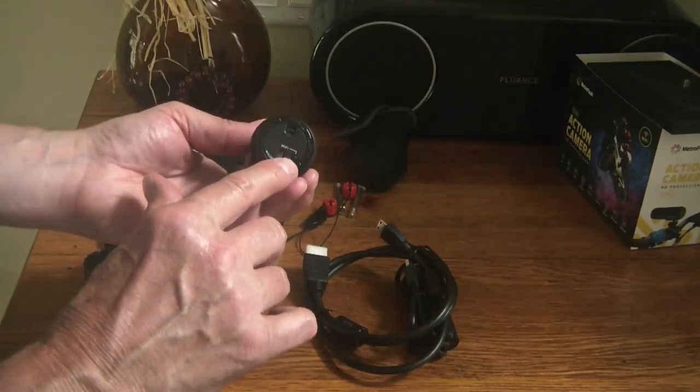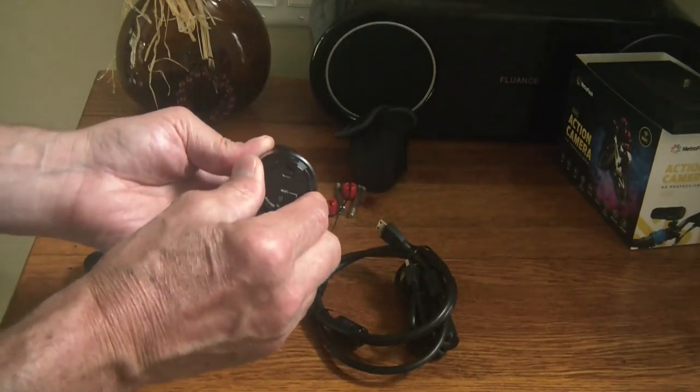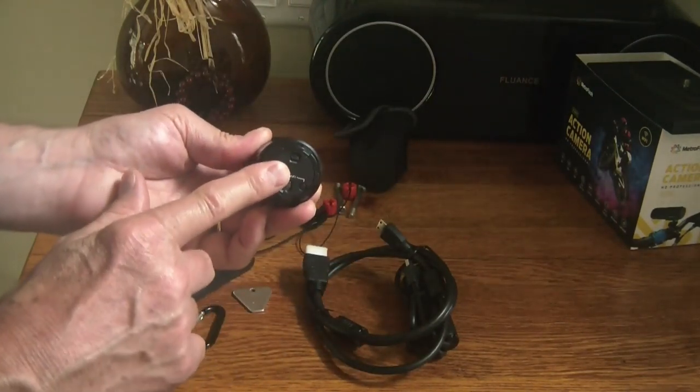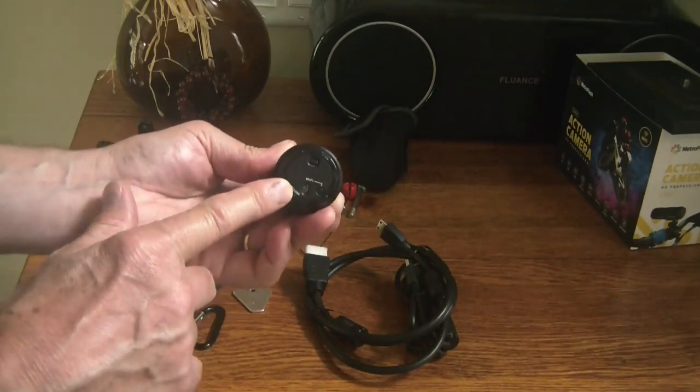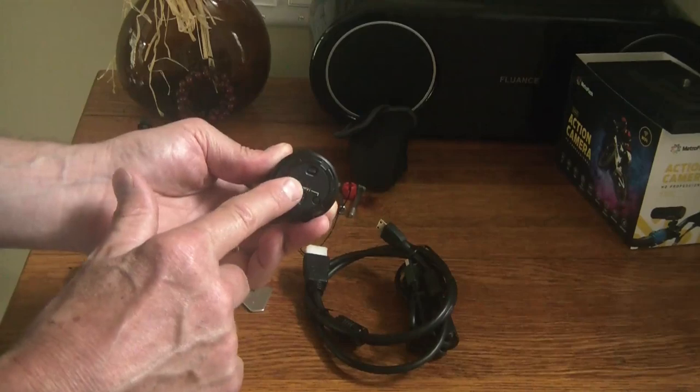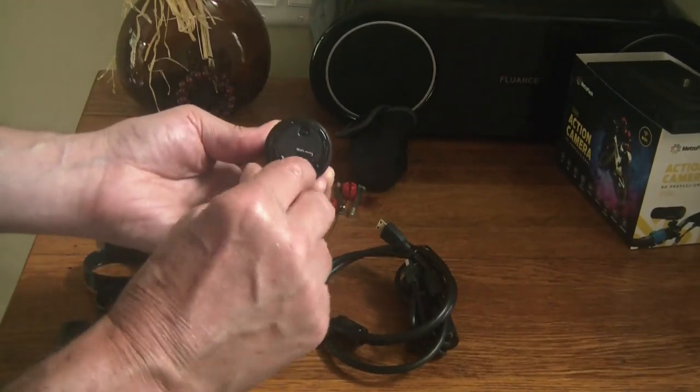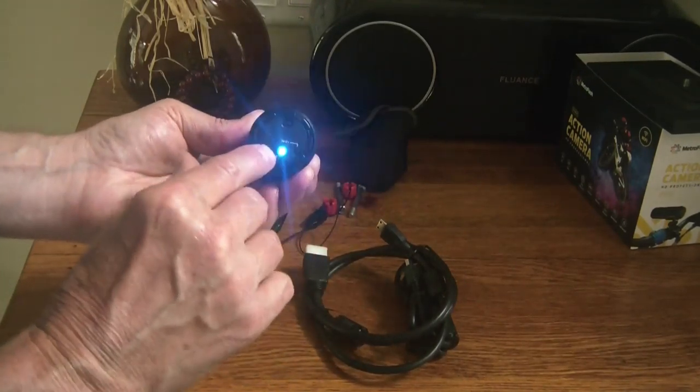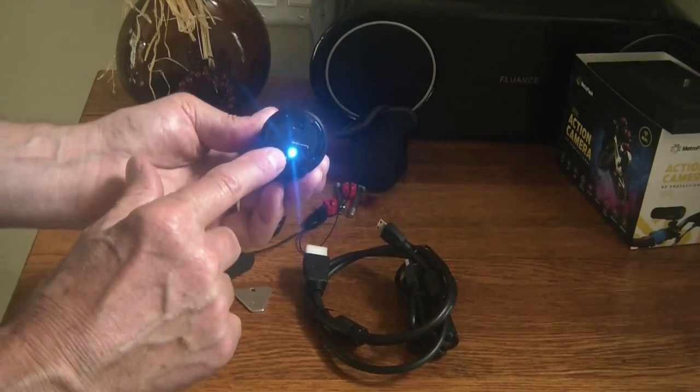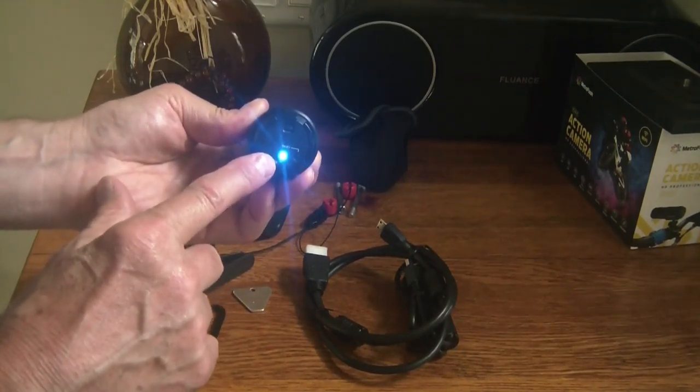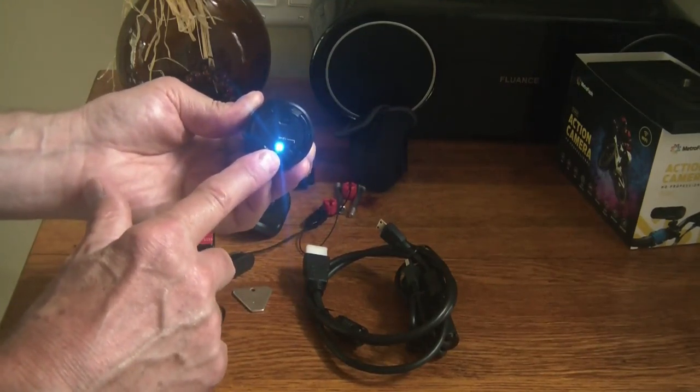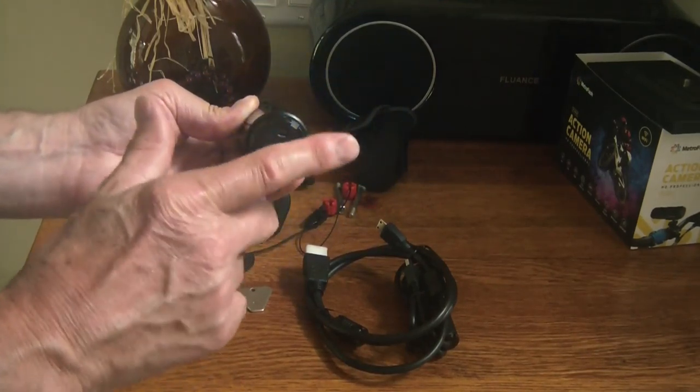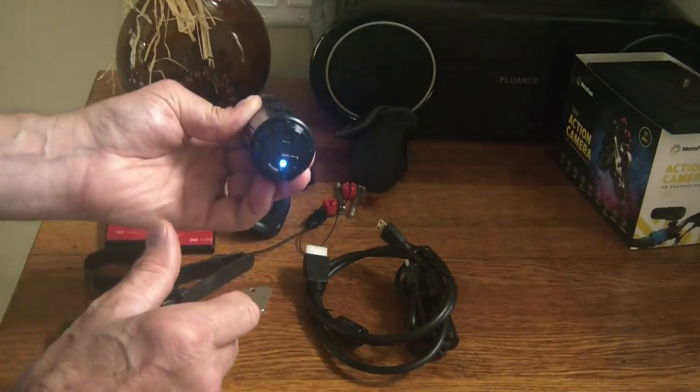Then on the back there's a Wi-Fi button. So this will actually set up its own little hotspot so that you can connect a smartphone to this. You can also connect a computer to this over the network that this creates, and when you turn the Wi-Fi on, the LED indicator on the back will light up solid until the Wi-Fi connection is established with your network and then it will slowly flash. It takes about 25 seconds and the network name that this camera creates is Action Plus.